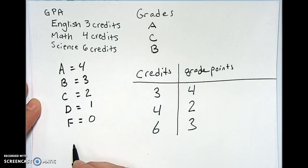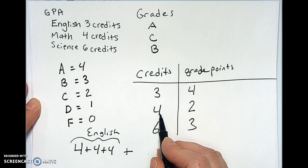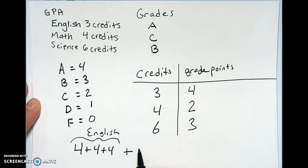We can do that we got three credits of four, so four plus four plus four. That right there is English. Plus we got four credits of C. So two plus two plus two plus two. That is math.